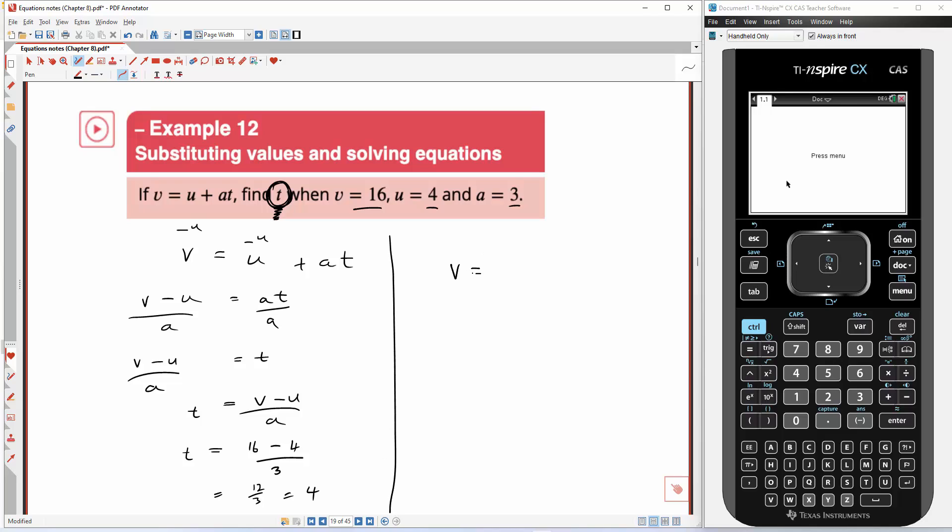Now if that's our formula, v equals u plus a t, what you could do straight away is substitute these values in. So we'll go 16 is v, u is 4, and a is 3. And then do you notice what that looks like? That just looks like a standard two-step equation solve that we've been doing for the last couple of lessons. So we could do take four from both sides, which is 12 equals 3t, divide by three, t is equal to four. So got exactly the same answer using this method here. But it's a good skill to know how to do this stuff here.